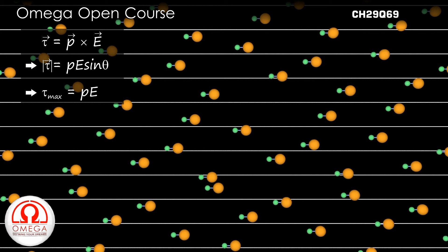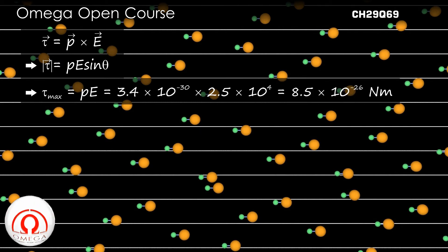Putting in the values, we get the magnitude of torque equal to 3.4×10⁻³⁰ × 2.5×10⁴ = 8.5×10⁻²⁶ N·m. This is our answer.